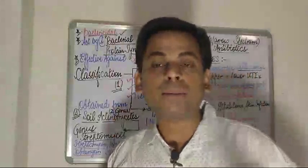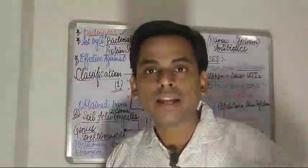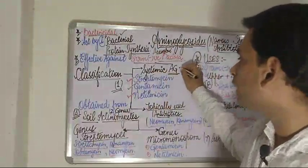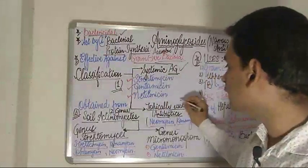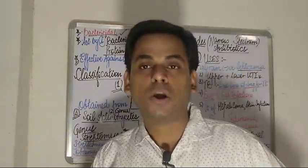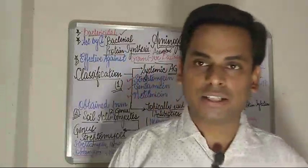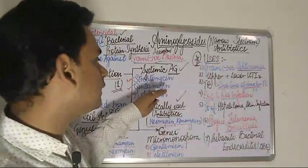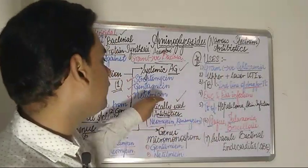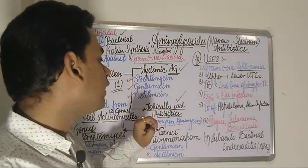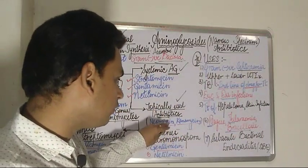Moving on to the classification of these aminoglycosides — they can be broadly subdivided depending upon usage and the site where they are used. They are broadly subdivided into systemic aminoglycosides and topically used aminoglycosides. The systemic aminoglycosides comprise streptomycin, gentamicin, and netilmicin, whereas the topically used antibiotics comprise neomycin and kanamycin.